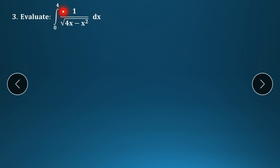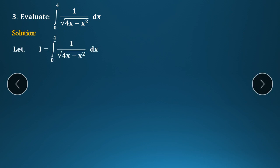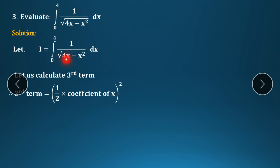Third example: evaluate integration from 0 to 4 of 1/√(4x − x²) dx. Unlike the previous two examples, this denominator has a square root. Let I equal the given example. The constant term here is 0, so the third term only requires the coefficient of x, which is 4: (1/2 × 4)² = 2² = 4. So the third term is 4.